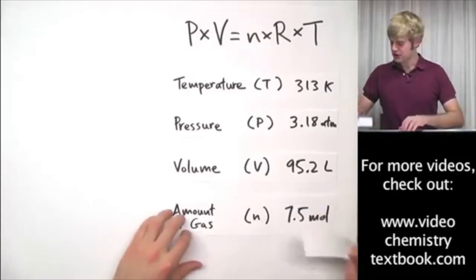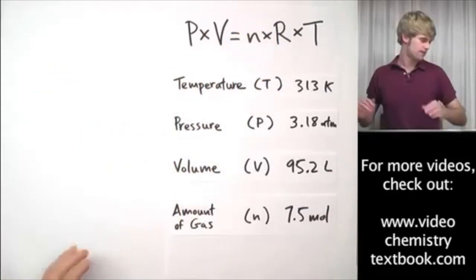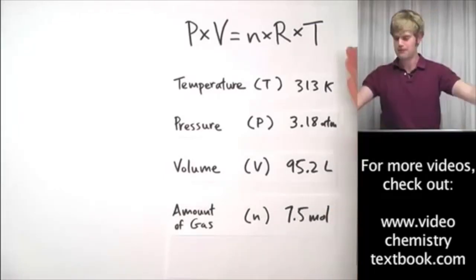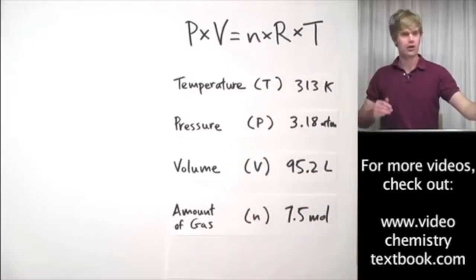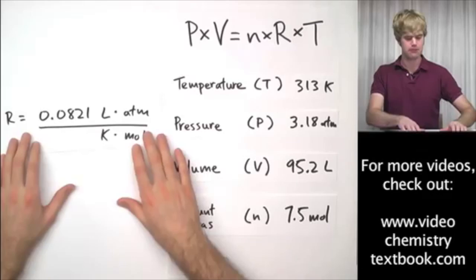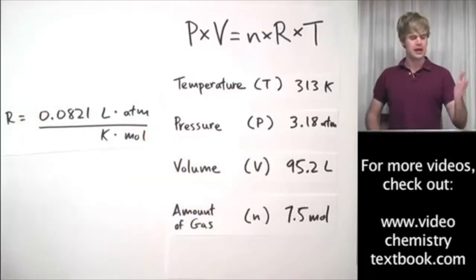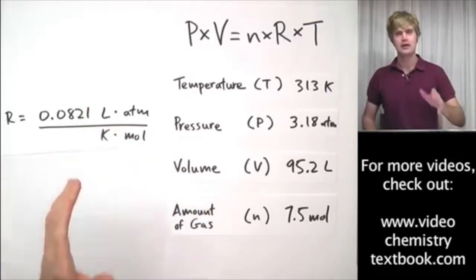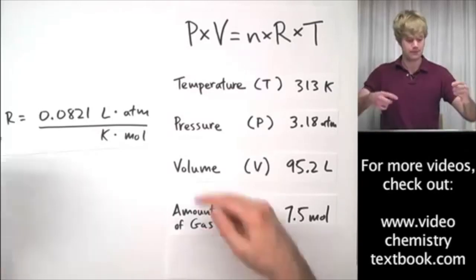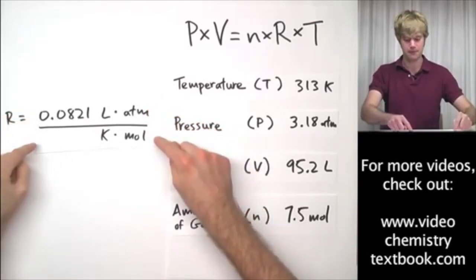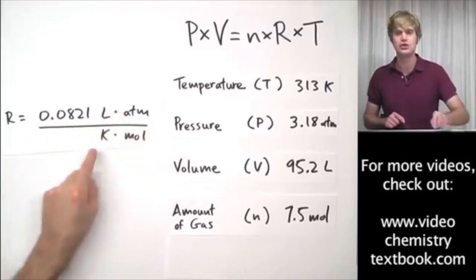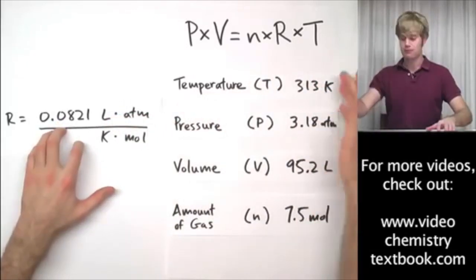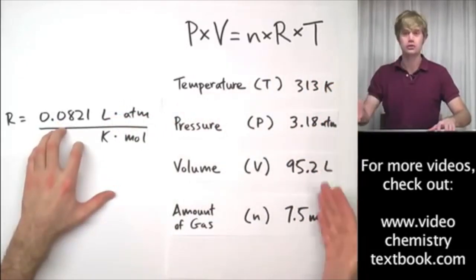So you may be asking yourself, okay, so R, what's R? R is what we call a constant. It's a number that we know ahead of time that doesn't depend on the variables in our problem. The R that I'm going to be using most of the time for the videos is 0.0821 liters times atm divided by Kelvin times mole. Now notice that this is a fraction. It has both a top and a bottom, and it also is not just a number, but it has units. And check this out. The units on R match the units in my problem.